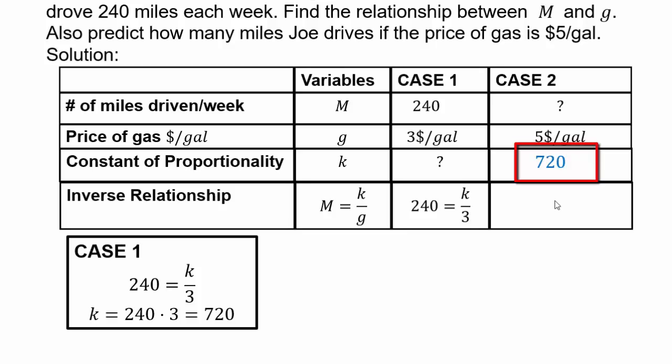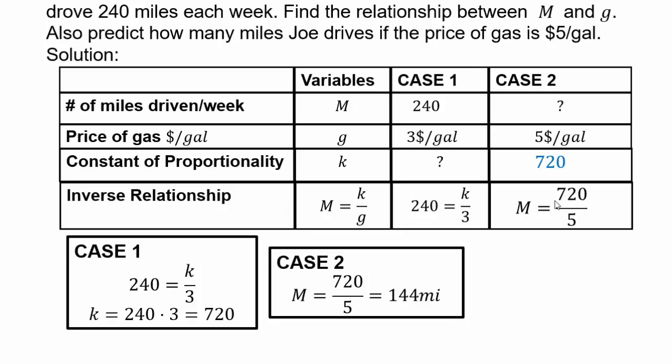Using this value of k, we can now find our m. So we have m would equal 720 divided by 5. So our case two answer, m would be 720 over 5 or 144 miles. So our final answer is Joe will drive 144 miles that week if the price of gallon was $5 per gallon.